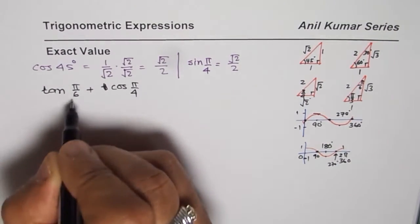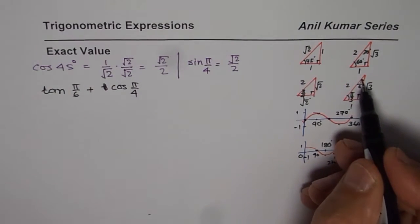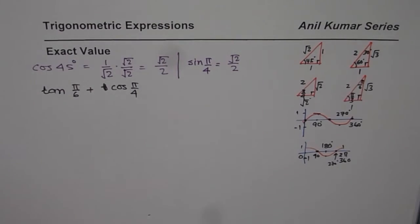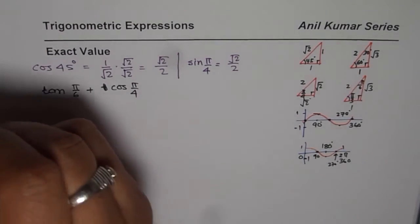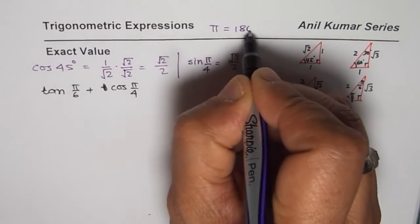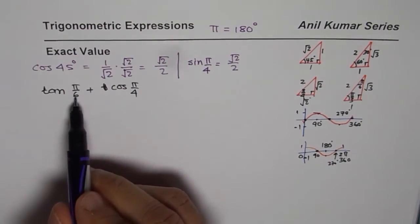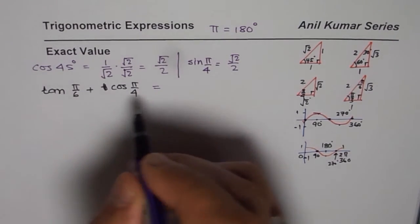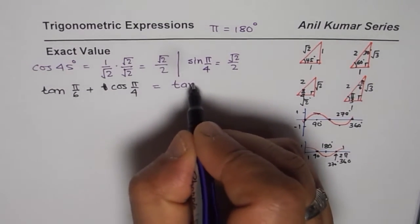Now, when I say tan pi by 6, it means 30 degrees. So, those of you who are working in degrees, for pi, let us write down, pi equals to 180 degrees. So, 180 divided by 6 is 30 degrees. Let me write similar expression here so that there is no confusion. So, what I am trying to do is, I am writing tan of 30 degrees plus cos of 45 degrees.